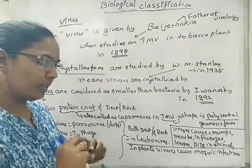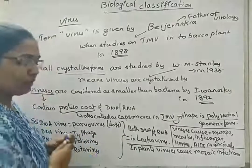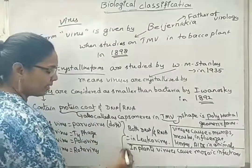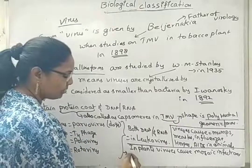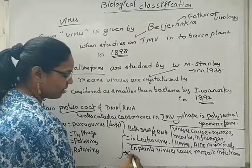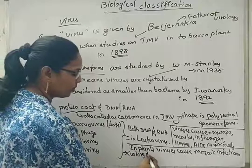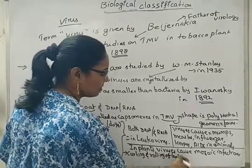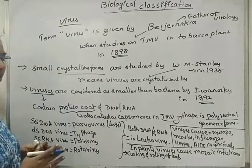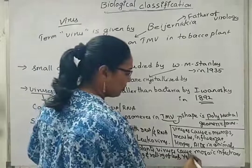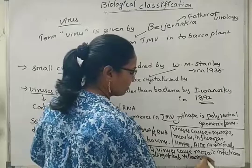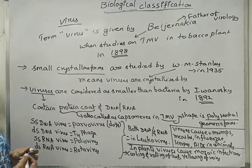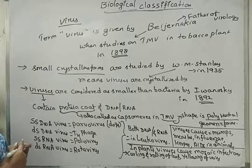The symptoms of mosaic infection in plants include rolling of the leaf, curling of leaf, yellowing of veins, and dwarfing of the plant. So symptoms will be curling and rolling of leaf, dwarfing of the plant, and yellowing of veins. These are a few symptoms of mosaic infections caused to the plants.